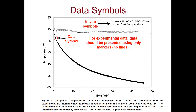The first thing we want to talk about is the data symbols. For Measurements Lab, you'll be taking experimental data, which should be presented using only markers — which means no lines. The reason for this is, when you take experimental data, your data points occur at discrete points, and your figure should represent this. We want to make use of that by using only markers. In this case, we've chosen a circle and a triangle for our two markers.